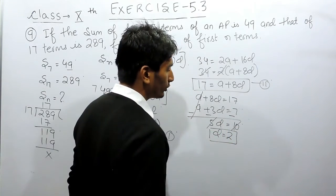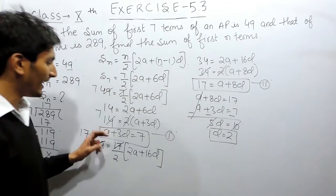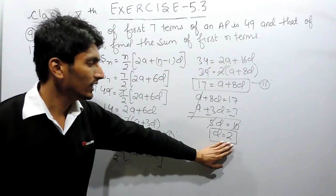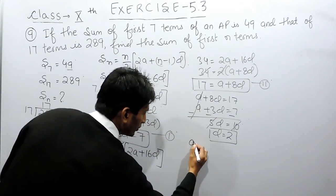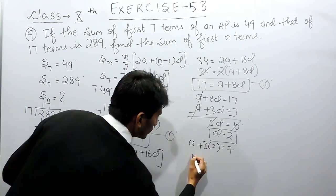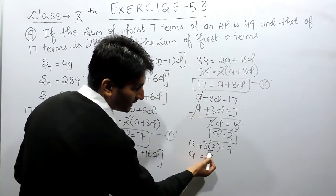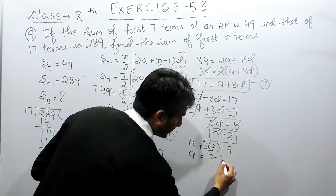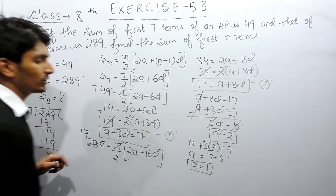So the value of D, the common difference, equals 2. Substituting D equals 2 into the first equation: A plus 3 into 2 equals 7, which gives A plus 6 equals 7. Shifting 6 to the other side gives A equals 1. So the first term of this AP is 1.